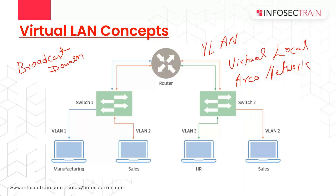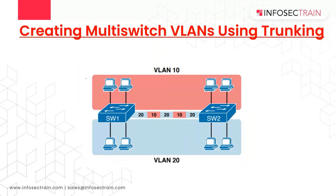When talking about creating multi-switch VLANs using trunking: configuring a VLAN on a single switch needs only a little effort — you simply configure each port to tell it the VLAN number to which the port belongs. With multiple switches, you have to consider additional concepts about how to forward traffic between switches. When using VLANs in networks with multiple interconnected switches, the switches need to use VLAN trunking on the links between them.